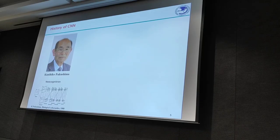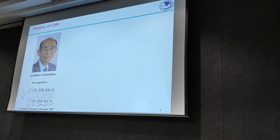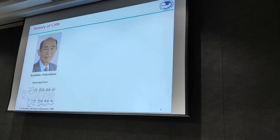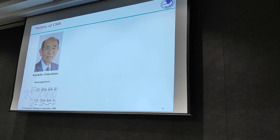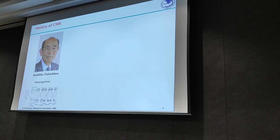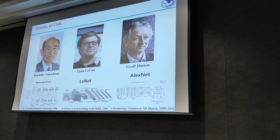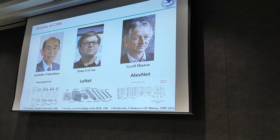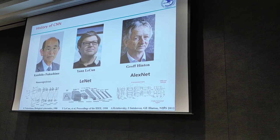As it turned out, the wealth of information provided by massive data was a perfect match for a class of computational models called convolutional neural networks, pioneered by Fukushima, Yann LeCun, and Jeff Hinton back in the 1980s. A basic operating unit in a neural network is neuron-like nodes.